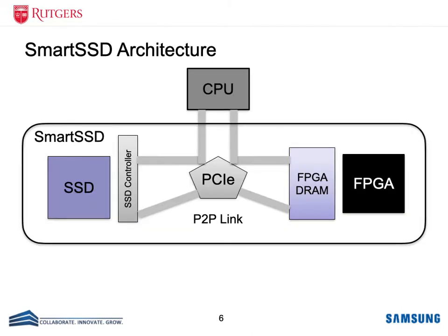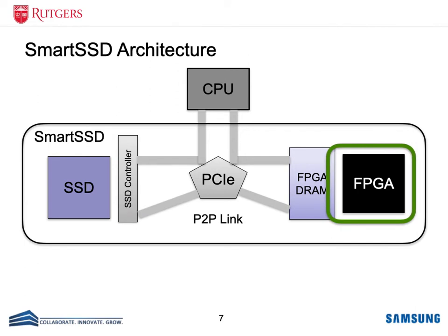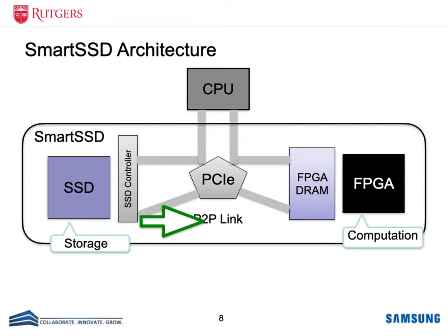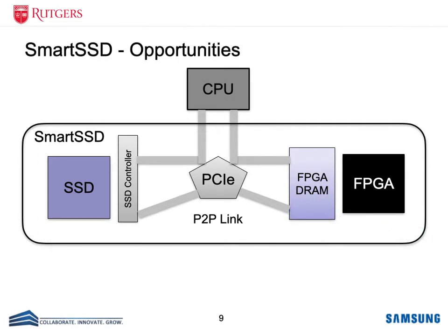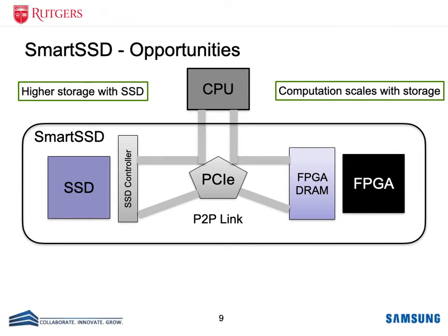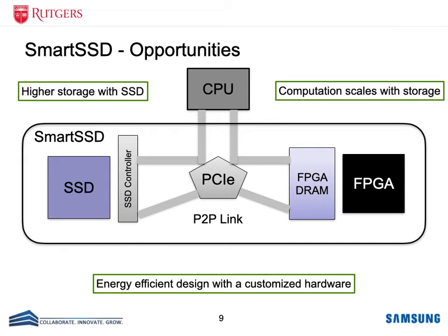Now I want to provide some background on a smart SSD. A smart SSD is an SSD with an onboard FPGA. The FPGA brings computation capabilities to the storage device. Another important feature of a smart SSD is that it allows data to be directly transferred between the SSD and the computation unit on the FPGA, with minimum involvement of the host CPU. There are several opportunities here: with SSD we can have higher storage capacity than DRAM-based systems; with FPGA the computation can scale with storage, enabling large-scale models; and by offloading computation to customized hardware on FPGA, we can achieve higher energy efficiency.